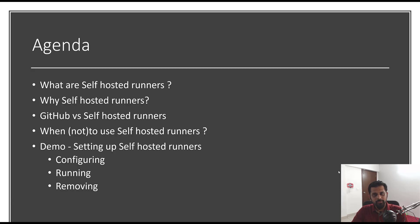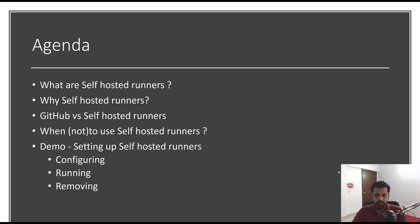The agenda of this session is: we'll start with an understanding of what self-hosted runners are and why we need them, then look at the differences between GitHub runners versus self-hosted runners and when not to use self-hosted runners. Finally, we'll end with a demo covering setup, configuration, running a job, and removing the self-hosted runner.